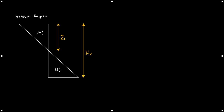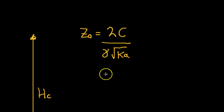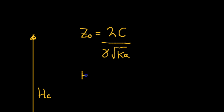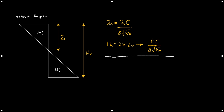Z₀ is calculated as two times the cohesion divided by the unit weight gamma times the square root of Ka. Z₀ is half the value of HC, so HC is simply two times Z₀ — or equivalently, four times the cohesion divided by gamma times the square root of Ka. You can see the link: it's simply double Z₀, so the two becomes a four.